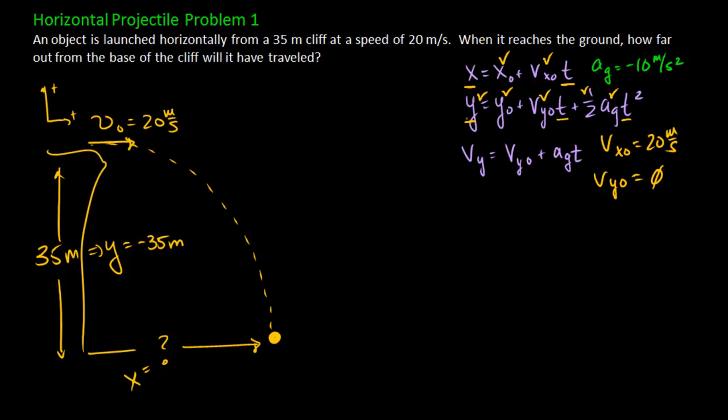So I'm going to start with the y equation. y is going to be negative 35 meters equals the initial y position is zero, so I'll leave that out. The initial y velocity is zero. So this whole term also goes away. And I have one half times negative 10 meters per second squared times t squared. Well, this is pretty straightforward to solve. One half of negative 10 is negative 5. If I divide both sides by negative 5, the negatives cancel out. I get 7.